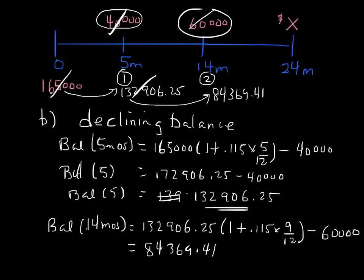Now we determine the outstanding balance at 24 months. We inflate the $84,369.41 by (1 + 0.115 × 10/12), covering the period from 14 months to 24 months — which is 10 months. That outstanding balance at 24 months is the size of the final payment. This gives a different value than the focal date method. Typically, banks use the declining balance method for all loan calculations. Note that with compound interest, both methods would produce identical results — the difference only arises with simple interest.